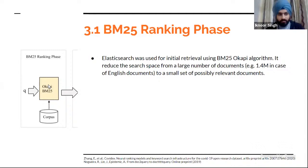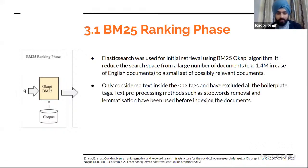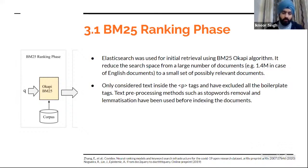In the first phase — the BM25 ranking phase — we use ElasticSearch for initial retrieval. BM25 reduces the search space from a large number of documents to a small set of possibly relevant documents. The dataset was in XML format, so we considered only text inside the P tags and excluded all boilerplate tags. We also used pre-processing methods such as stopword removal and lemmatization before indexing the documents.